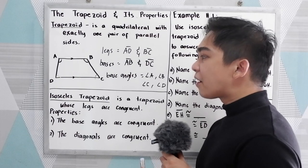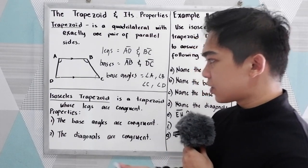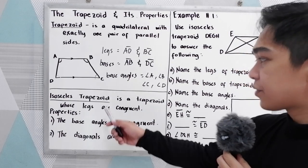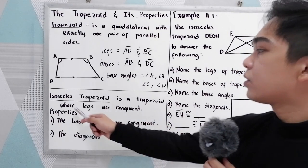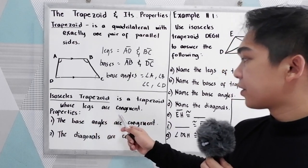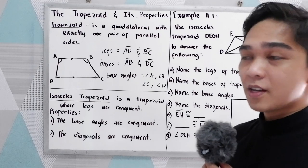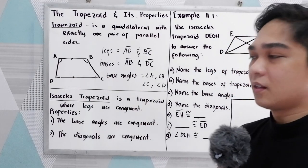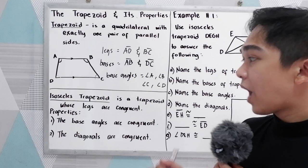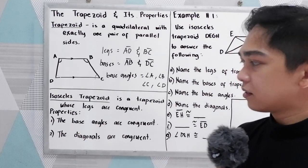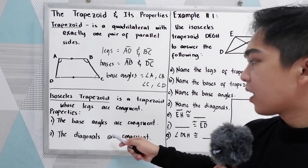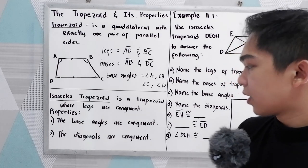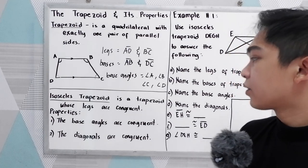We also have a special kind of trapezoid, which is the isosceles trapezoid. An isosceles trapezoid is a trapezoid whose legs are congruent — that means the legs are equal. Its properties are: number one, the base angles are congruent; and second, the diagonals are congruent.